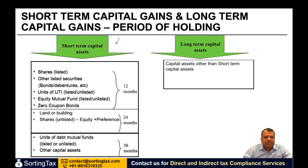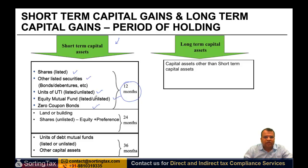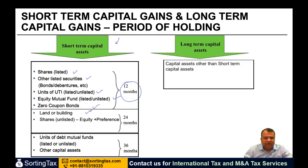Regarding the period of holding of a capital asset: for 12 months or less, we have listed shares, other listed securities, units of UTI, equity mutual fund, and zero-coupon bonds. For 24 months, you have land or building and equity or preference shares which are unlisted. For 36 months, it is units of debt-based mutual fund or other capital assets. Anything not covered here is a long-term capital asset.